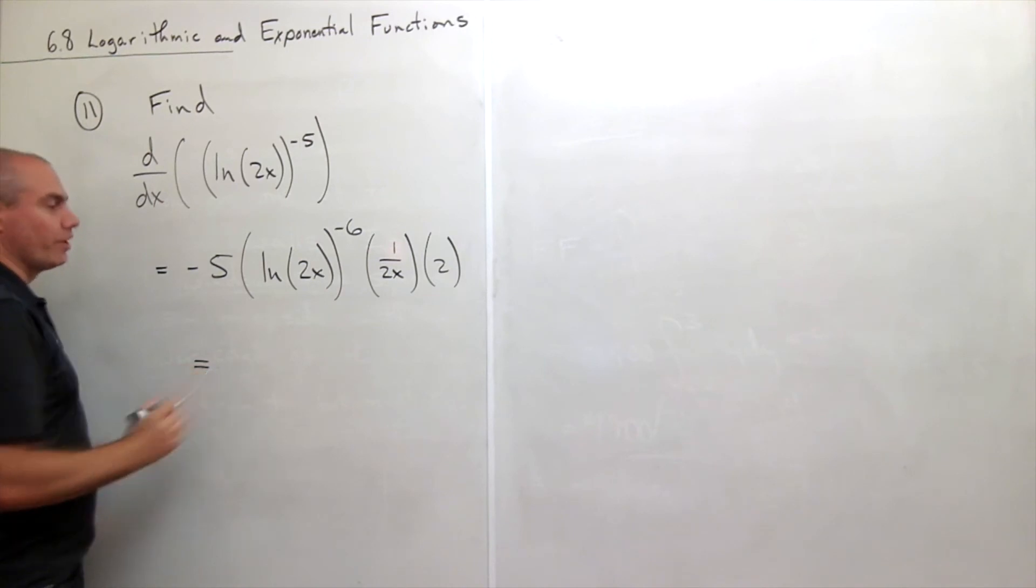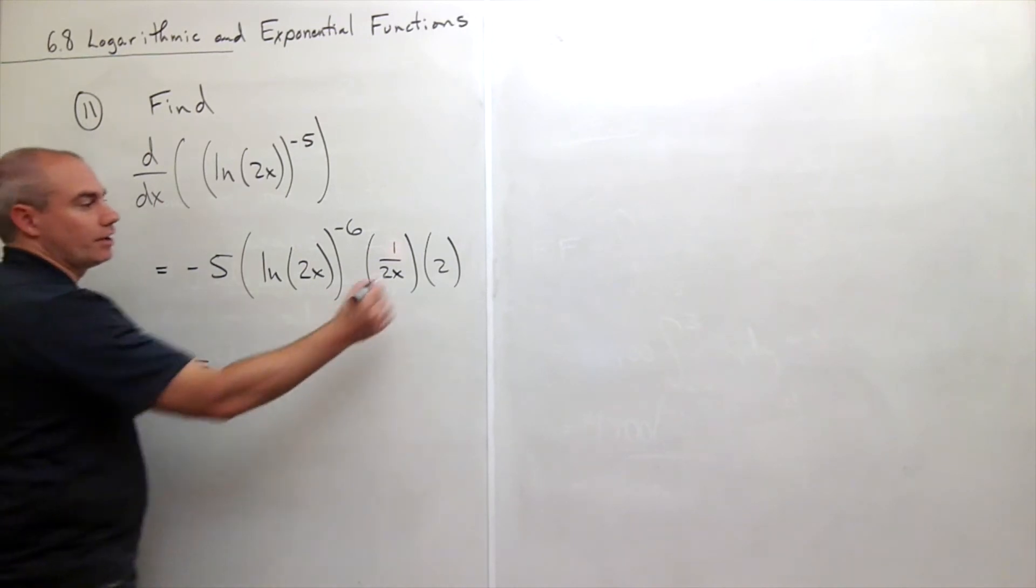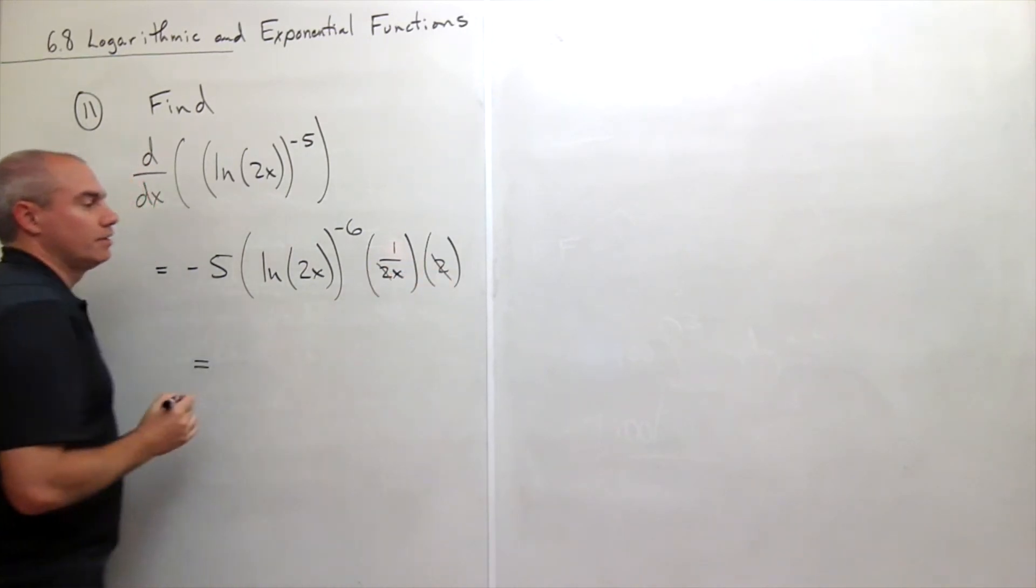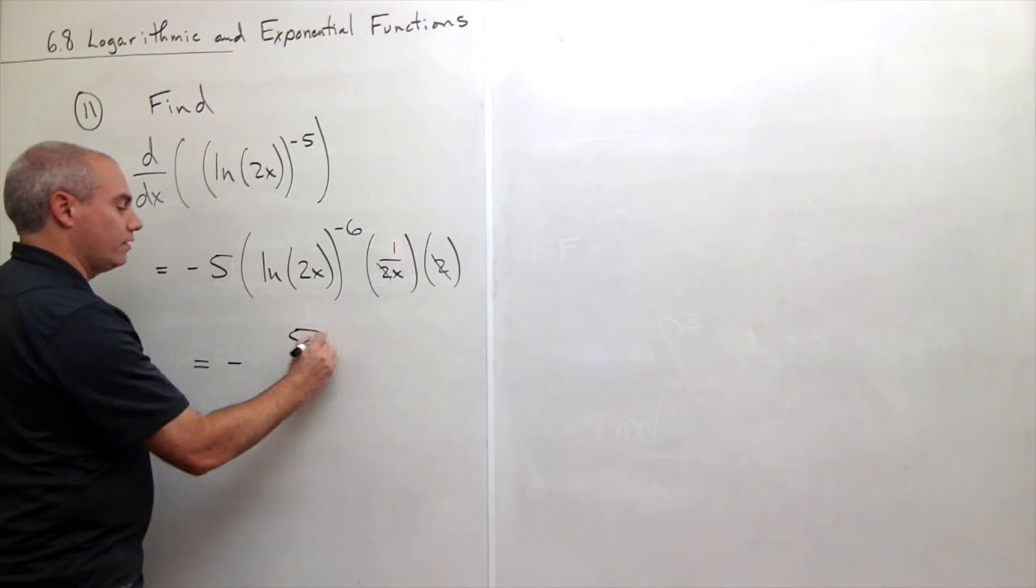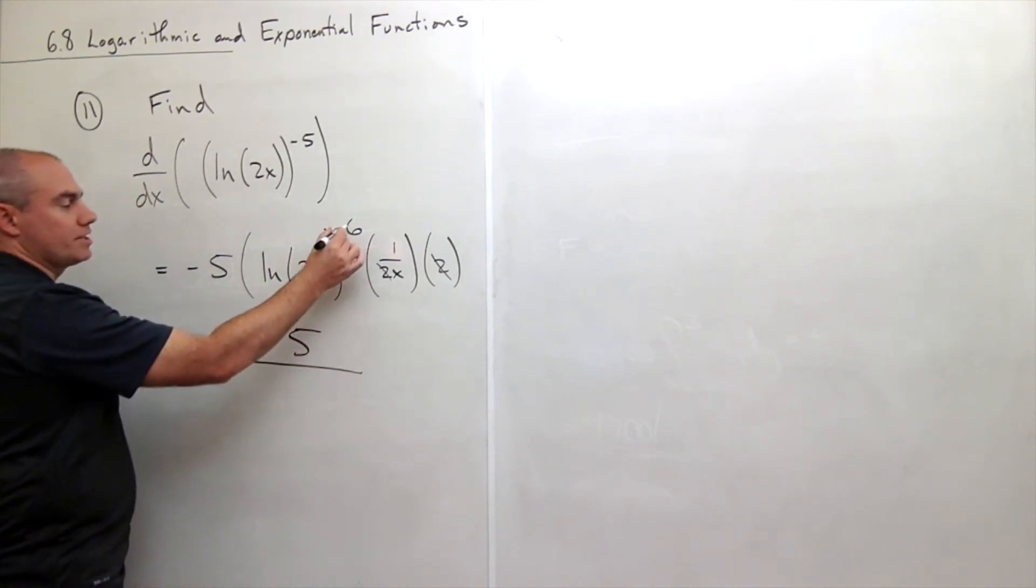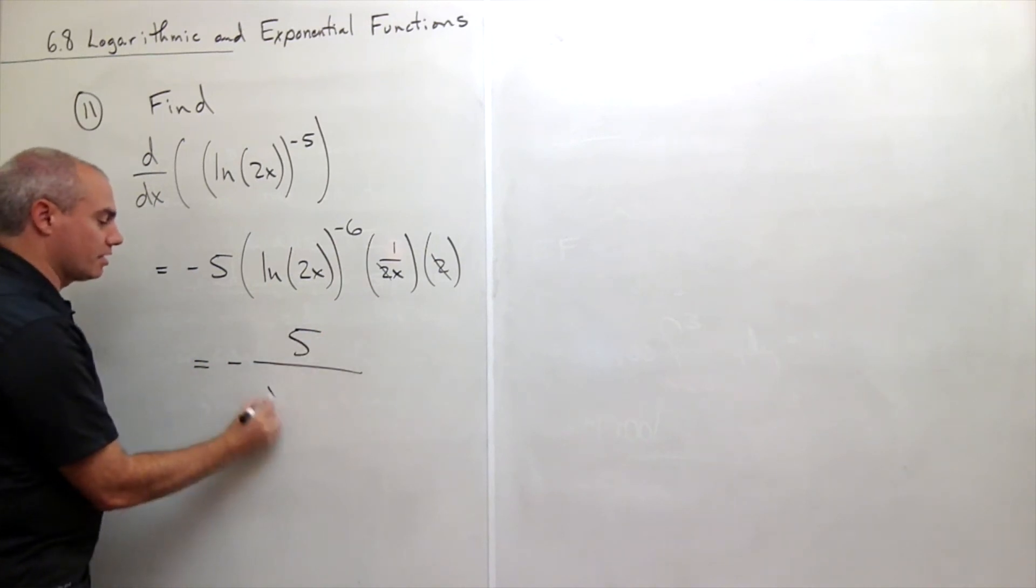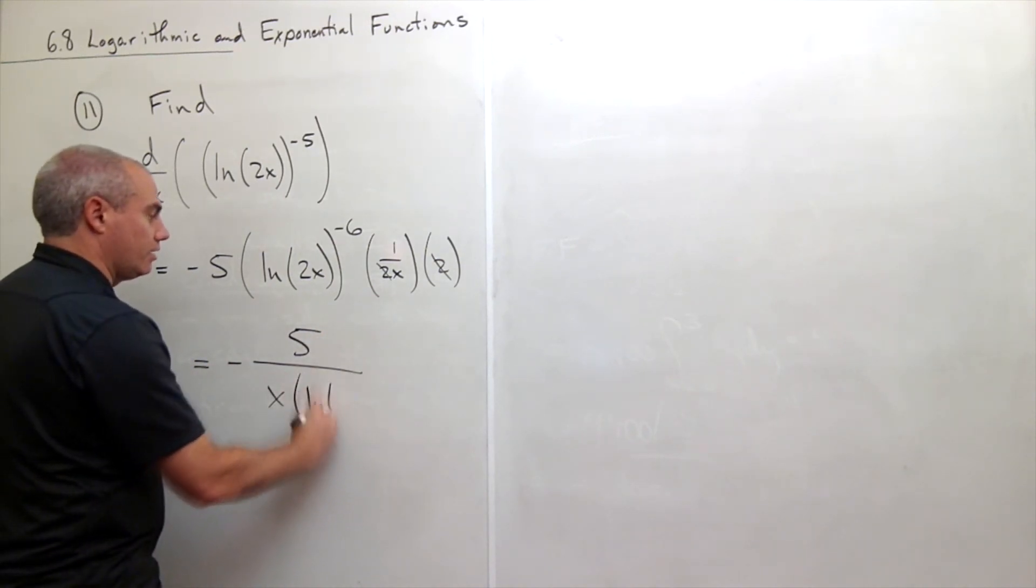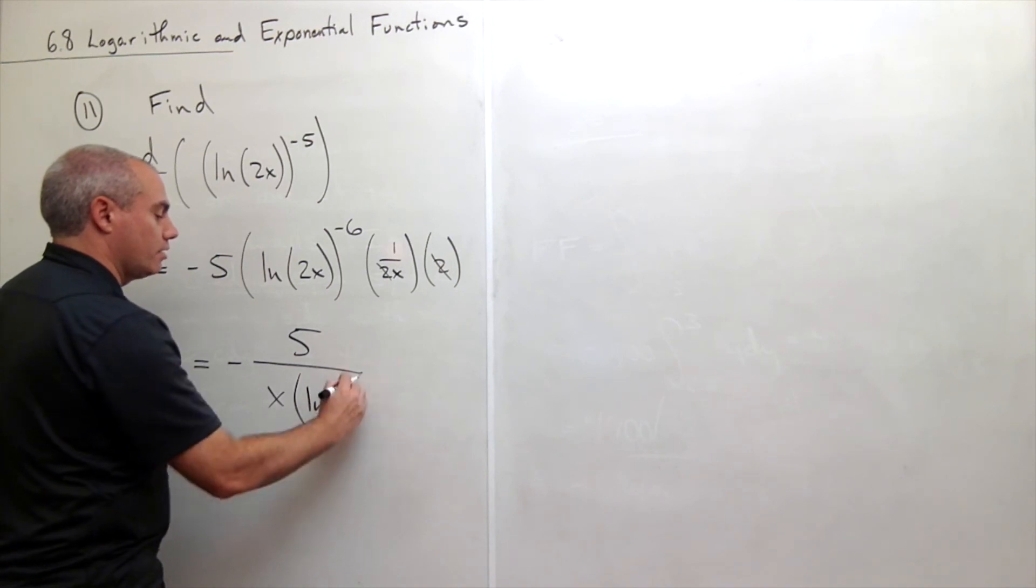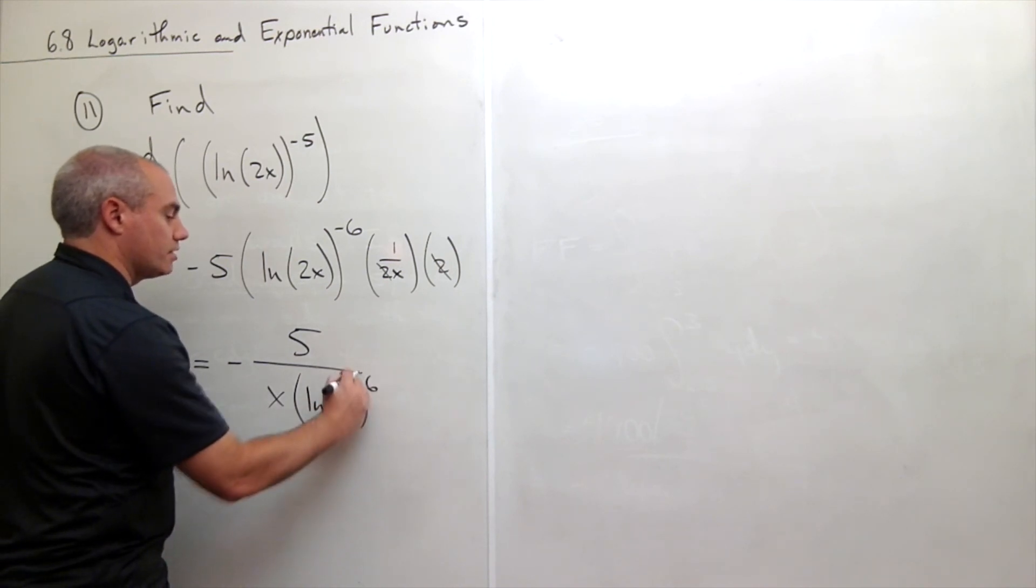So if we were to rewrite that and maybe write it a little neater, notice the 2 and the 1 half cancel. And so on top I get minus 5. And on bottom, since this is to the minus 6 power, I can put it on bottom. This x is on the bottom. So I get x times ln(2x) raised to the 6 power.